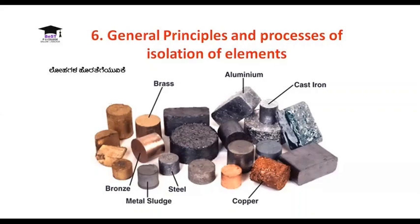Since it is a sulfide ore, the concentrated ore is roasted so that arsenic and antimony impurities are converted into their volatile oxides and leave the reverberatory furnace. In the roasting process, copper pyrites reacts with oxygen to produce cuprous sulfide (Cu₂S), ferrous sulfide (FeS), and sulfur dioxide gas.